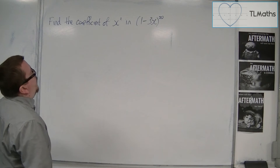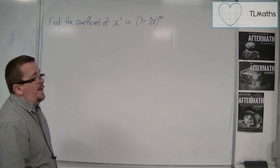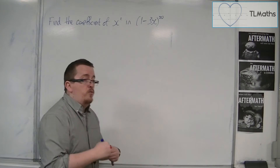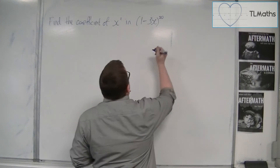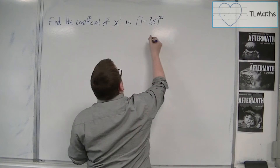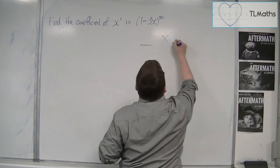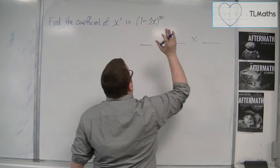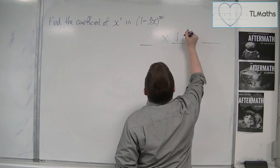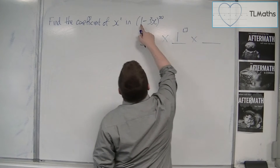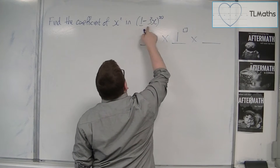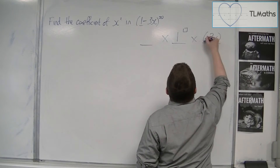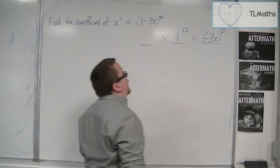So, (1 minus 3x) to the power of 20. We know from our previous examples that this is going to be split up into three parts: 1, 2, 3. The middle part is 1 to the power of something, and the minus 3x is also being raised to the power of something.